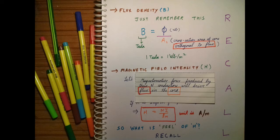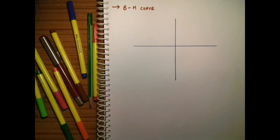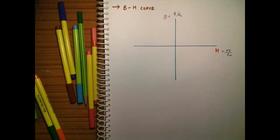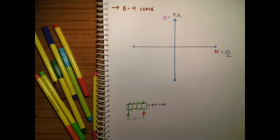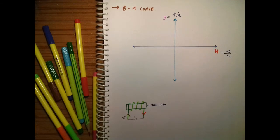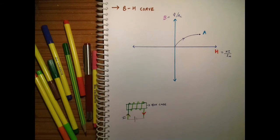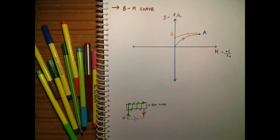Every magnetic material displays its own BH curve characteristics. Let us take an example of an iron core over which a conductor is wound, connected to a battery with the direction of current as shown in the figure. This direction of current is taken as positive. As we increase current, the core gets magnetized, and at point A it will reach the saturation point — that is, the core is fully magnetized. As we increase H, it affects the flux density B.